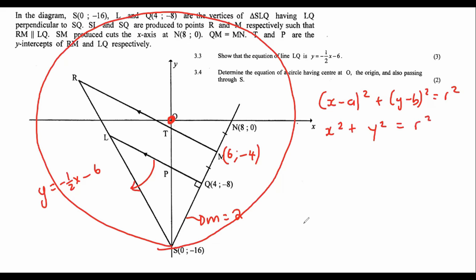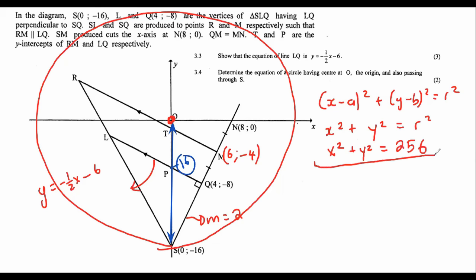This vertical distance here could be the radius, and that vertical distance is 16. So the radius of our circle is 16. We can say x² + y² = 16², which is 256. So x² + y² = 256 is the equation of that circle.